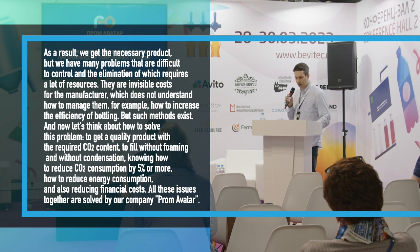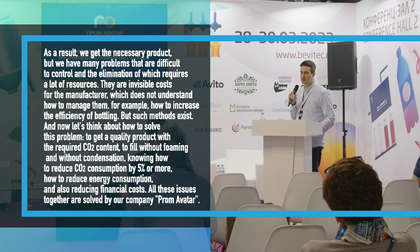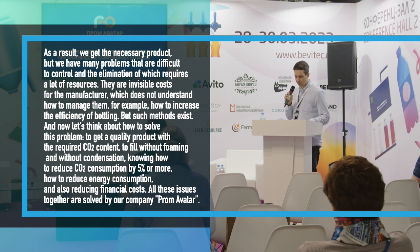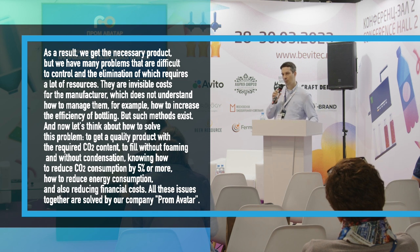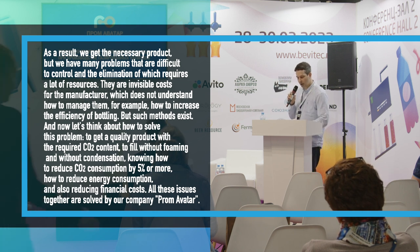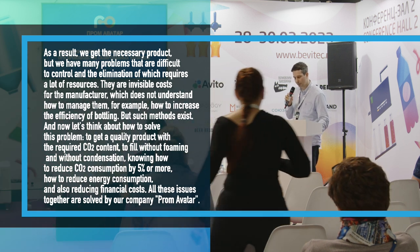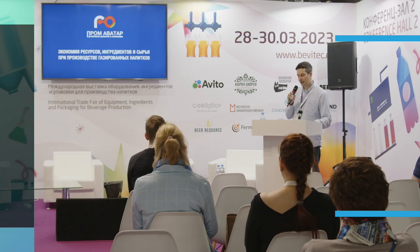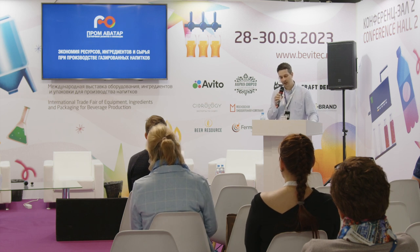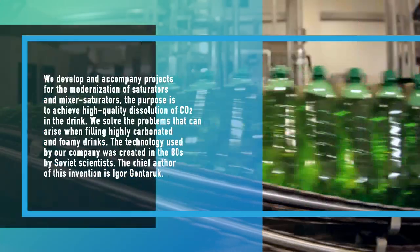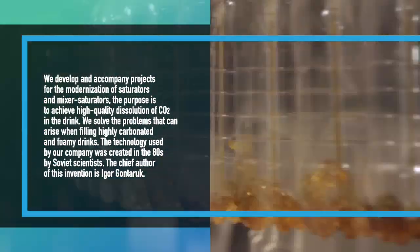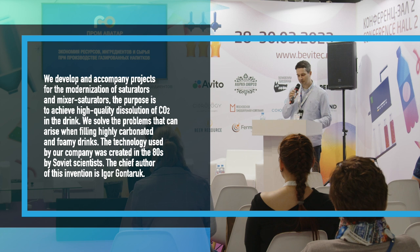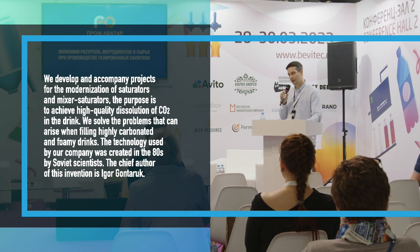For example, how to increase the efficiency of bottling. But such methods exist. Let's think about how to solve this problem: to get a quality product with the required CO2 content, to fill without foaming and without condensation, knowing how to reduce CO2 consumption by 5% or more, how to reduce energy consumption, and also reducing the financial costs. All these issues together are solved by our company, PromAvatar. We develop and accompany projects for the modernization of saturators and mixer saturators. The purpose is to achieve a high quality dissolution of CO2 in a drink. We solve the problems that can arise when filling highly carbonated and foamy drinks.